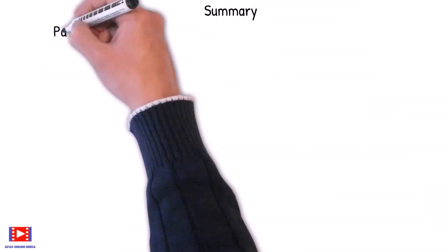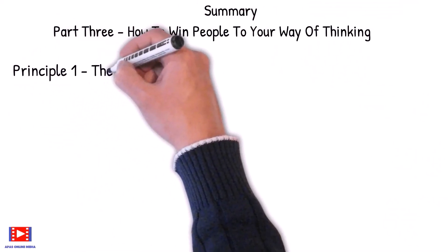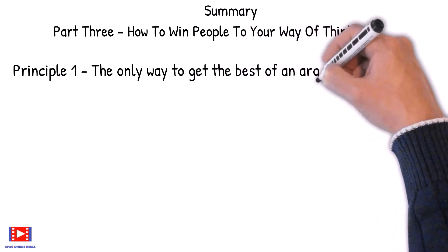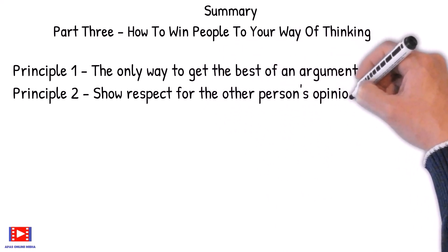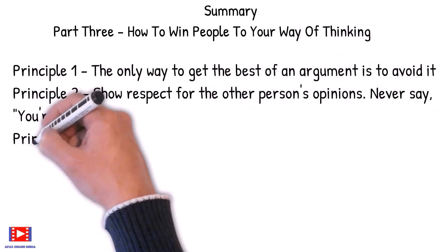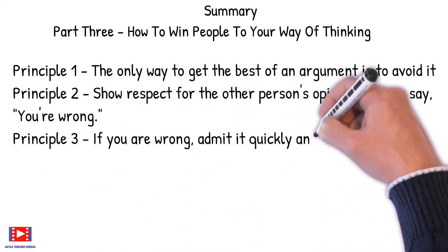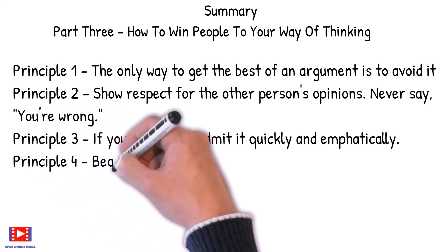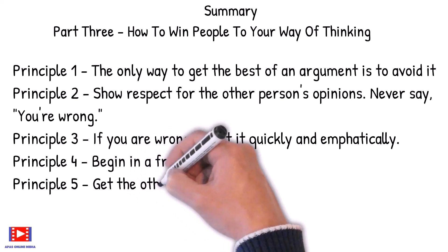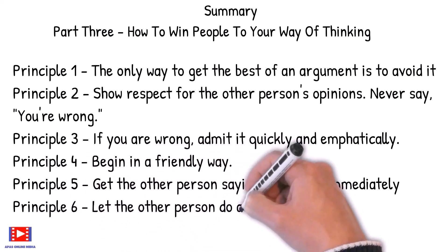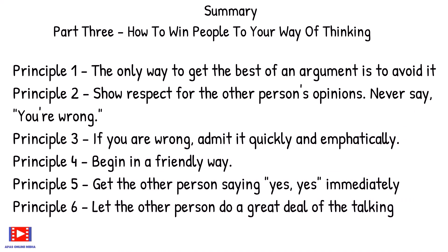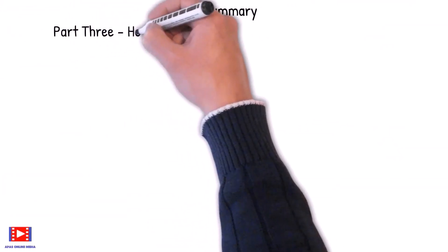Let's summarize what we have learned so far. Part 3: How to Win People to Your Way of Thinking. Principle 1: The only way to get the best of an argument is to avoid it. Principle 2: Show respect for the other person's opinions. Never say you are wrong. Principle 3: If you are wrong, admit it quickly and empathetically. Principle 4: Begin in a friendly way. Principle 5: Get the other person saying yes, yes immediately. Principle 6: Let the other person do a great deal of the talking.